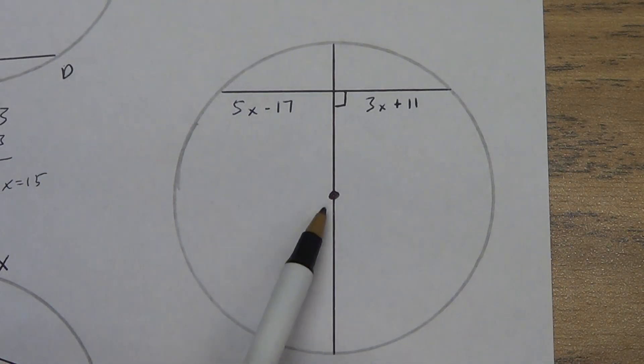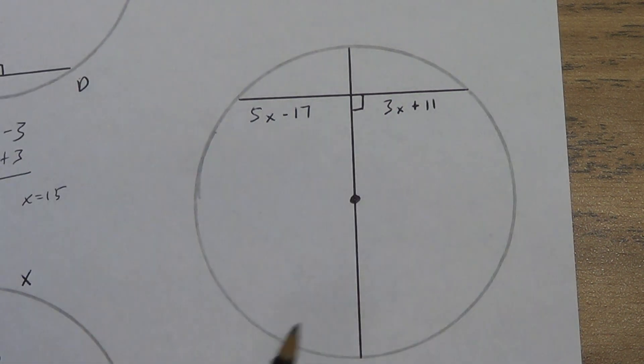Once again, this is not just some random dot. If there's a dot there, a point there, it means it's the center of the circle. So copy this down. Go ahead and try to solve this one. Pause the video and then come back.